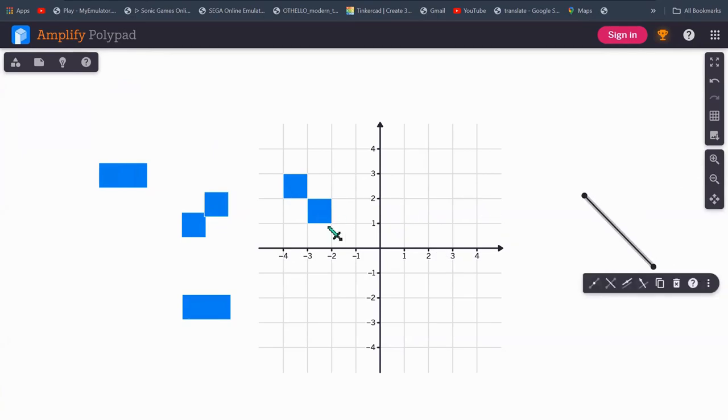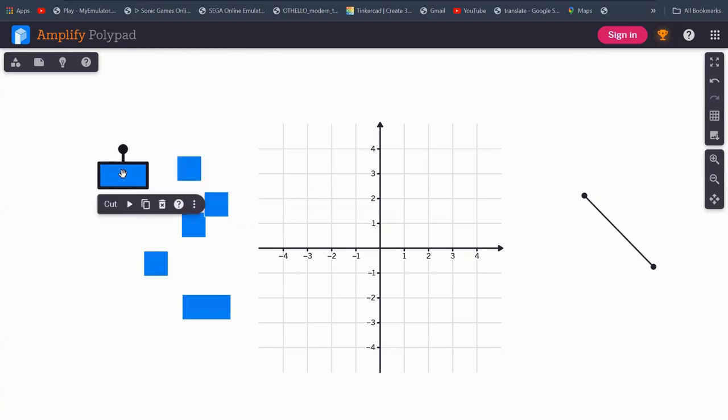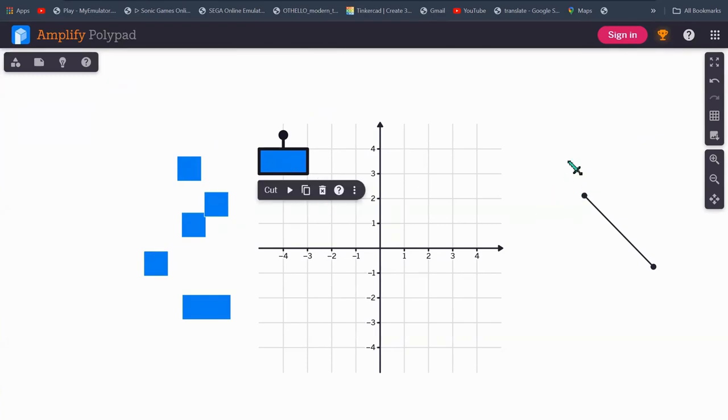Well, I'll just move this to the side. Now, what is translation? Well, translation is just moving. It's that easy. So you can see where this rectangle is, right? I'll just use a square for simplicity.